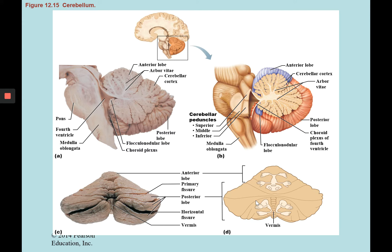Here we can see images of the cerebellum, also known as the little brain. It's very convoluted, just like the cerebrum, hence its name. It will also have deep or internal white matter surrounded by gray matter. The internal white matter of the cerebellum, called cerebellar white matter, looks like a branching tree and is known as the arbor vitae. There are two lateral lobes to the cerebellum, connected by transverse fibers called the vermis.